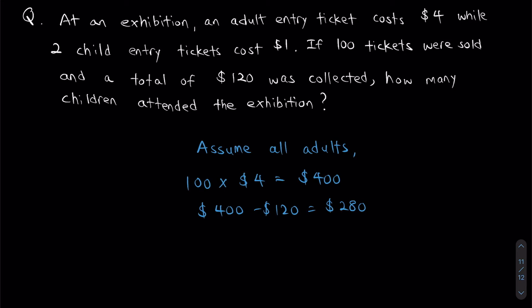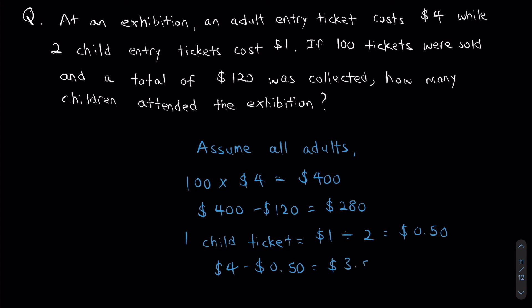One adult ticket costs $4 — we know that already. But the question doesn't immediately tell us how much a child ticket costs; it tells us that two child tickets cost $1. Which means one child ticket costs $1 divided by 2, which is half a dollar, or 50 cents. At this point we need to find the difference between the costs: $4 minus $0.50, which gives $3.50.